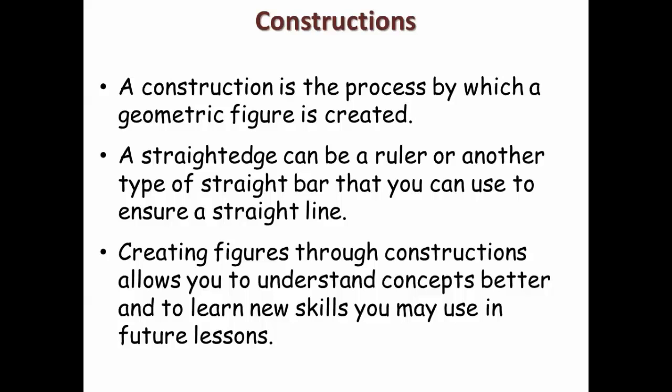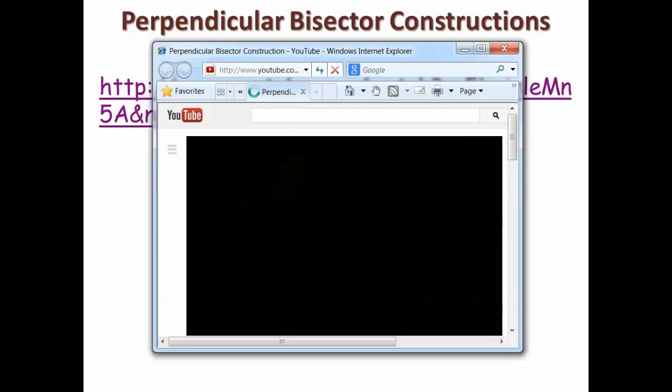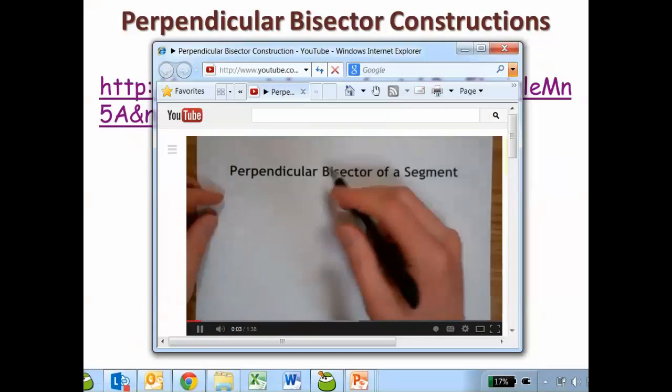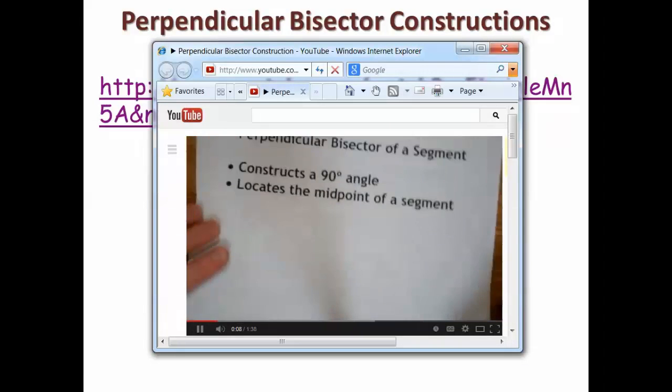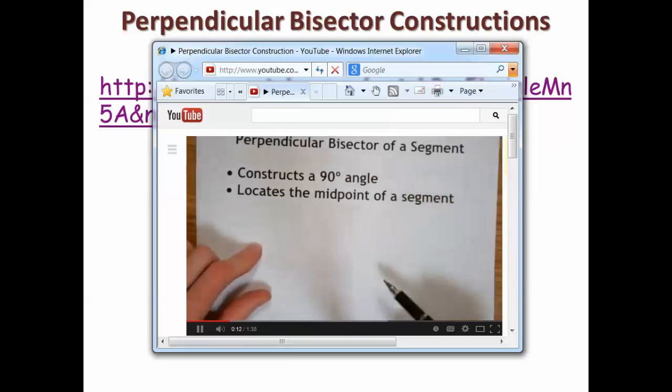The first video that we're going to watch, all of these are on YouTube except for one, so the quality might not be great. The first one we're going to watch is perpendicular bisector constructions. This video will show you how to construct the perpendicular bisector of a segment. You can use this construction to construct a 90 degree angle and it also locates the midpoint of a segment.